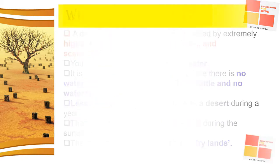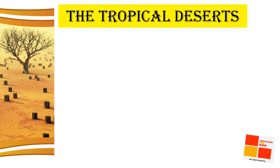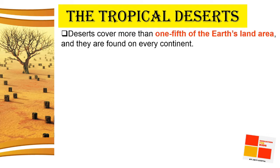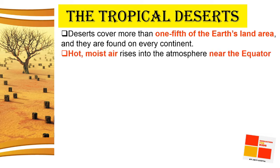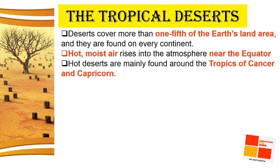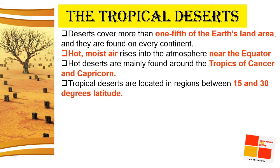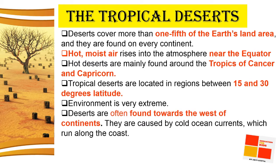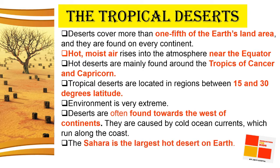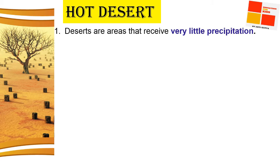Tropical deserts cover more than one-fifth of the earth's land surface. Hot, moist air rises into the atmosphere near the equator. Hot deserts are mainly around the Tropic of Cancer and Capricorn, located in regions between 15 to 30 degree latitudes. The environment is very extreme, and deserts are often found towards the west of continents. The Sahara is the largest hot desert on earth.